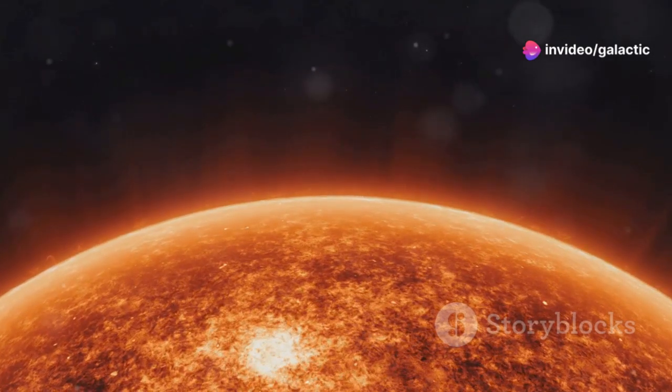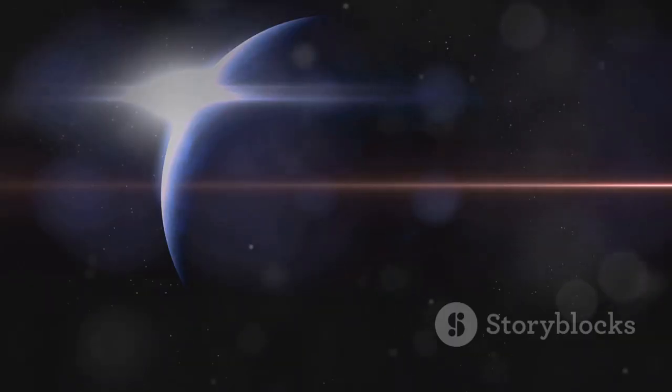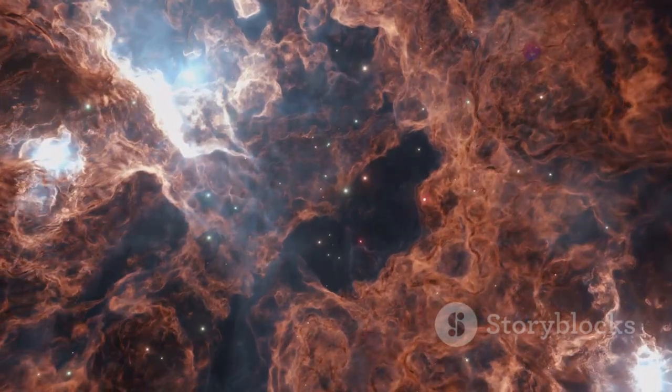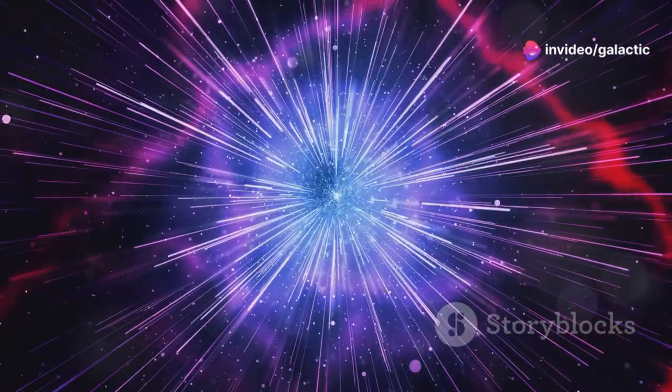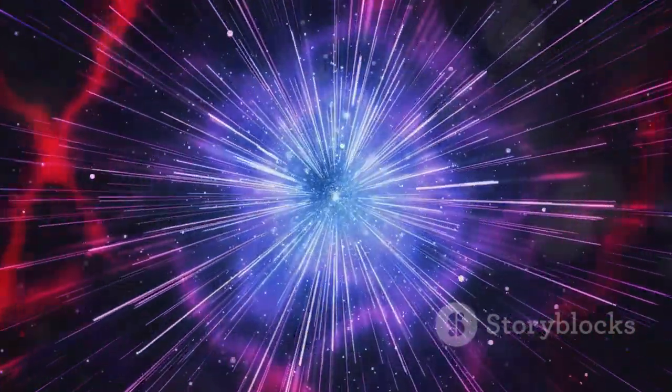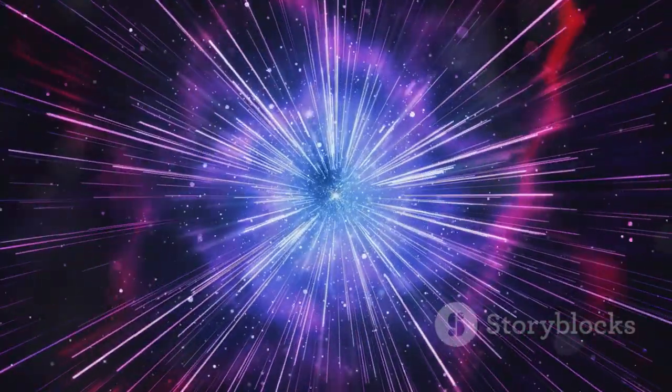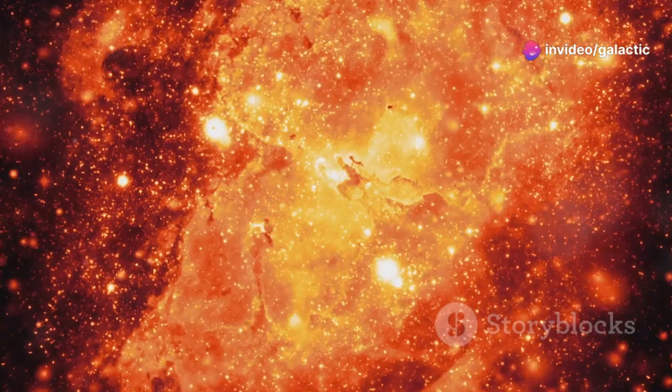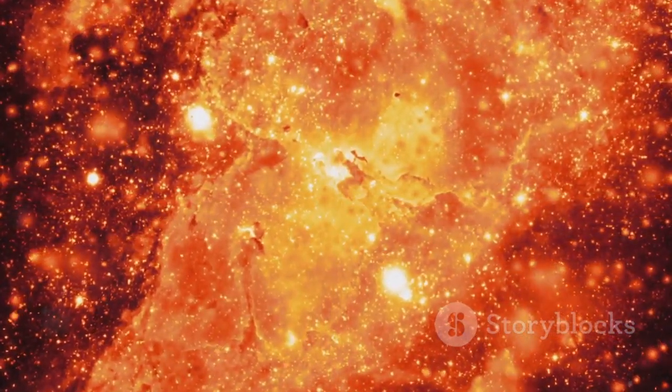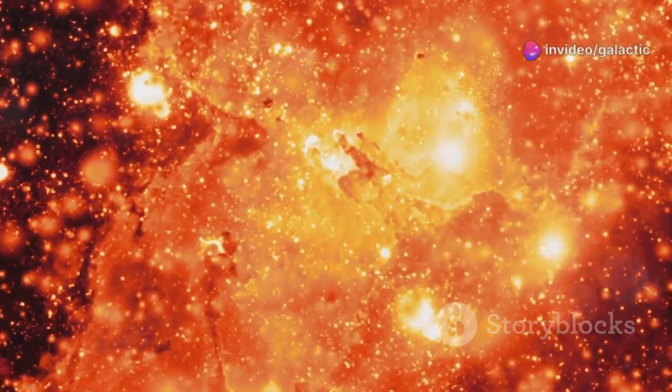This radiation, invisible to the human eye, carries with it the fingerprints of the elements being forged in the star's core. By studying these fingerprints, astronomers can learn about the nuclear reactions happening deep within the star. By analyzing this infrared light, astronomers can decipher the chemical composition of Betelgeuse. This analysis provides clues about the star's past and future, helping scientists predict its eventual fate, and gain valuable insights into the processes that drive stellar evolution. Understanding these processes is key to unraveling the mysteries of the universe and our place within it.